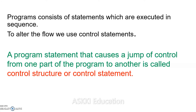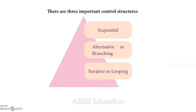A program statement that causes a jump of control from one part of the program to another part is called a control structure or control statement. In programming languages, there are three important control structures.